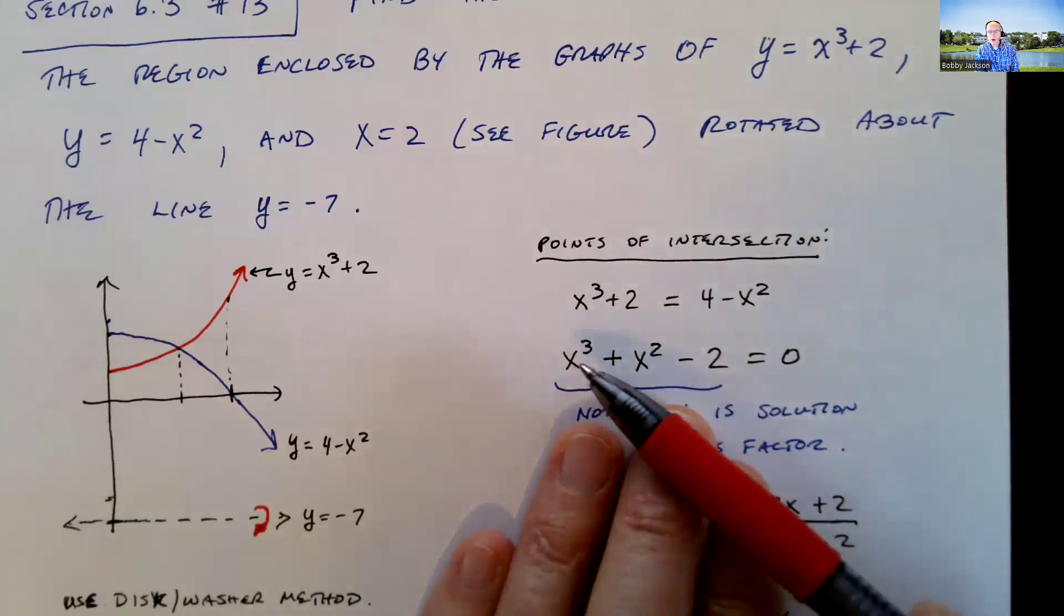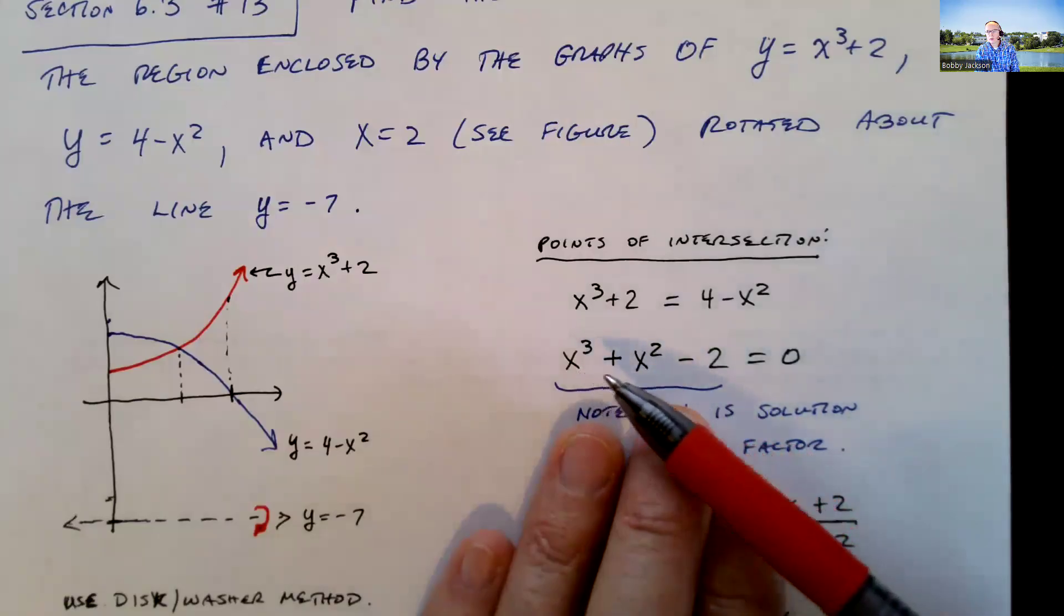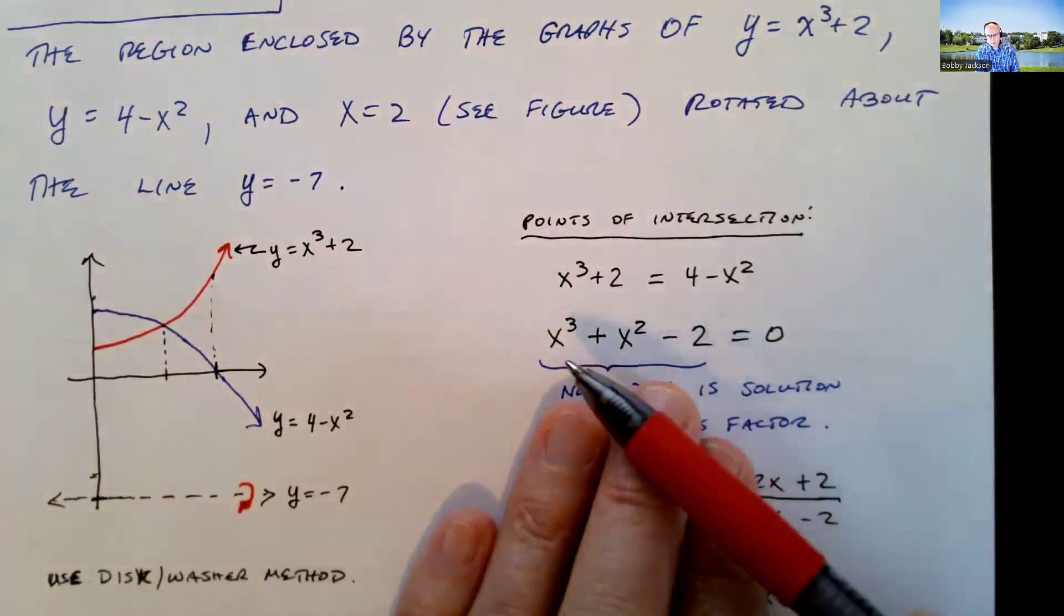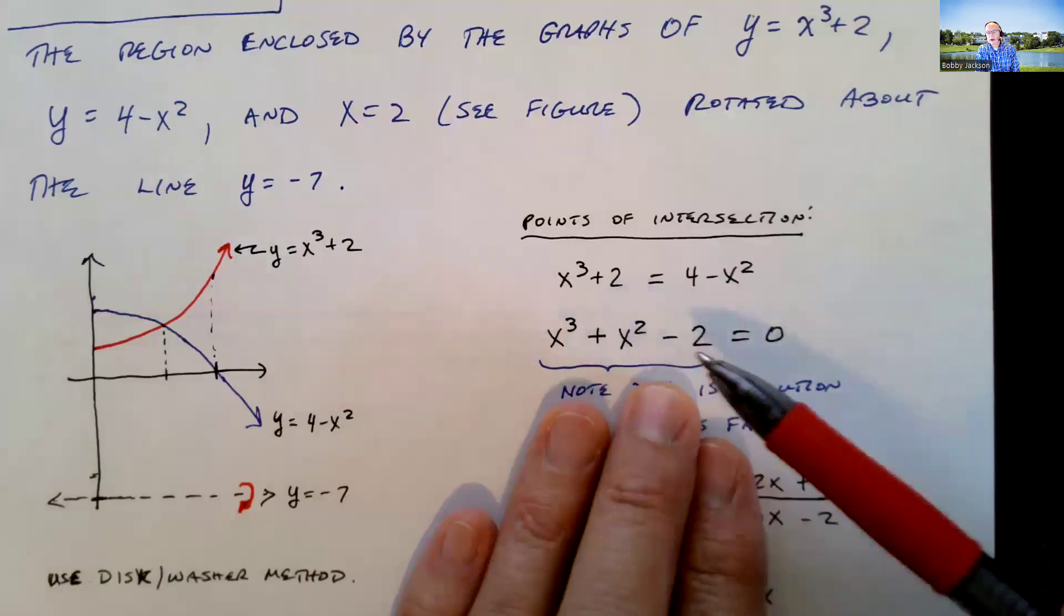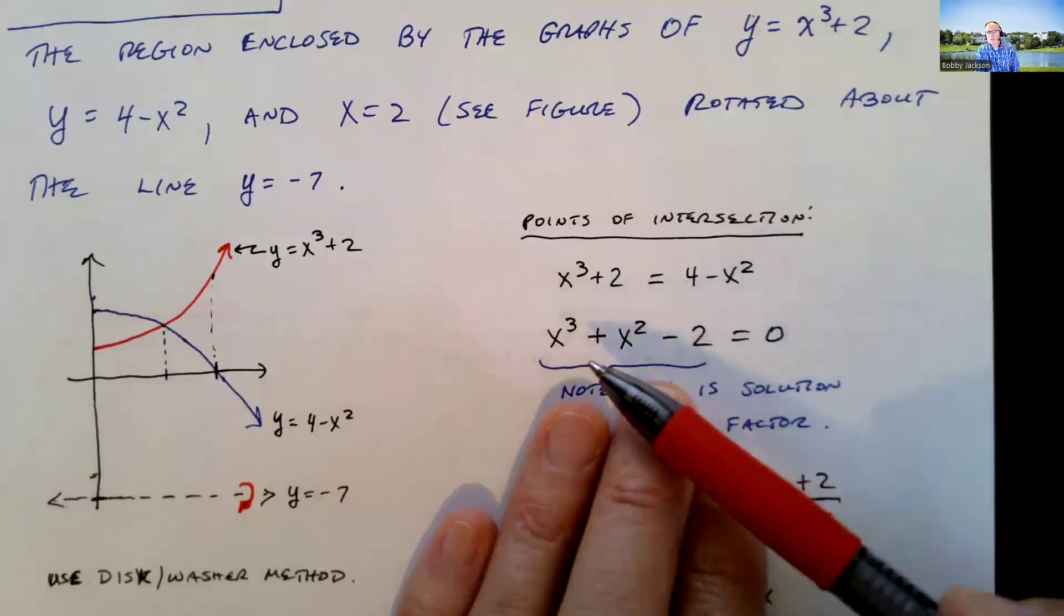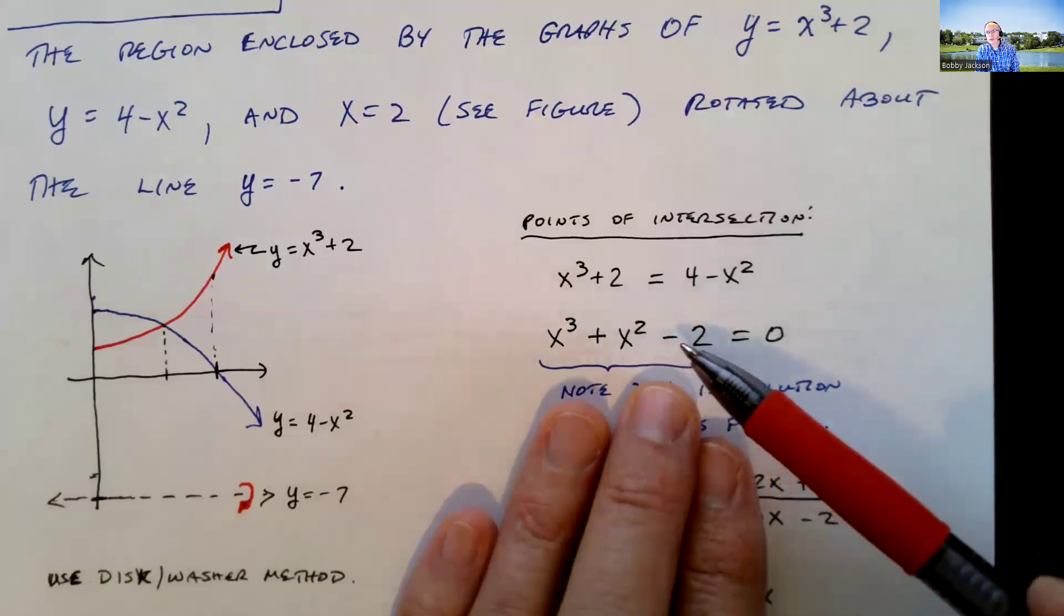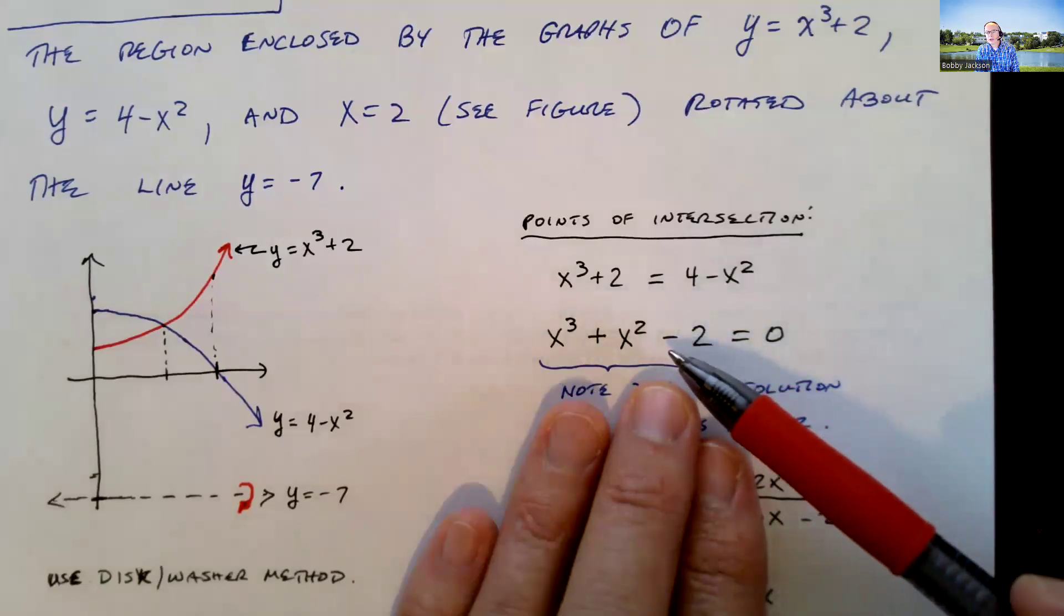Because there's no common factor other than 1 or negative 1 that we want to pull out. And this is not x squared plus something x minus 2. I can't factor it as a product of two binomials. So go back to polynomial equations. What can we do? We can try and see if we can find a zero. You can use the rational zeros test, which the coefficient of x cubed is 1. The constant term is negative 2. So negative 2 divided by 1 is negative 2. So the factors, the zeros of this polynomial, are going to be factors of negative 2. That would be plus or minus 1 or plus or minus 2.